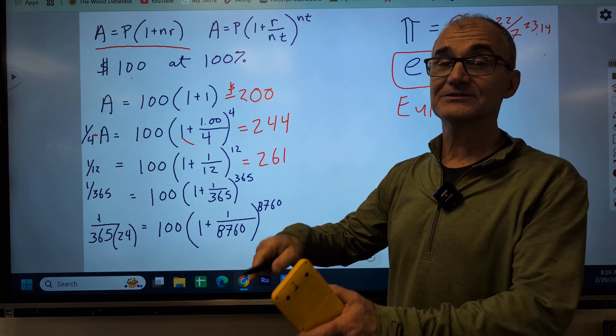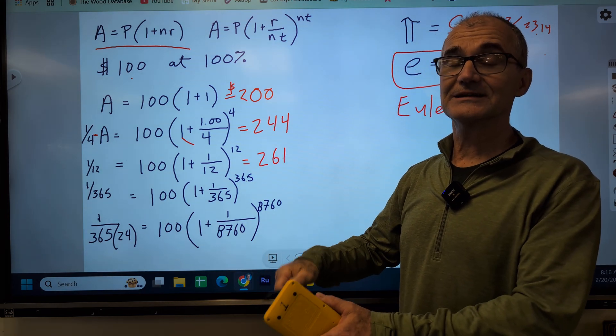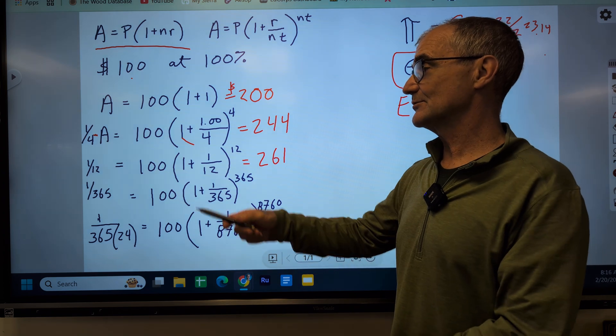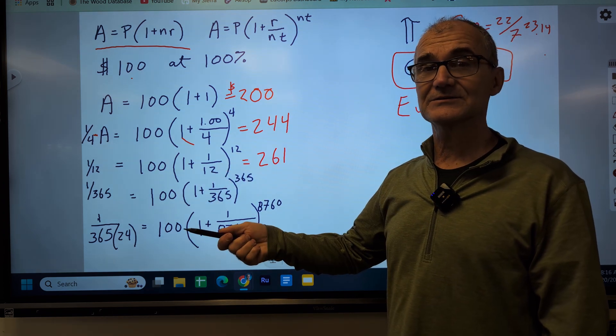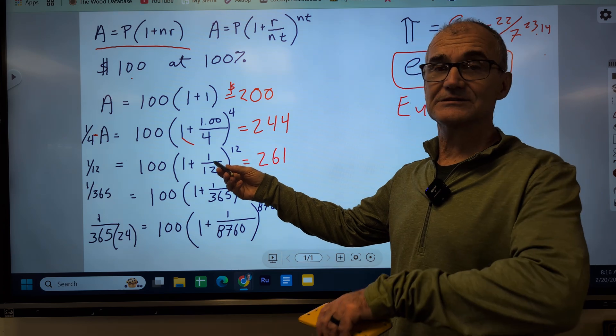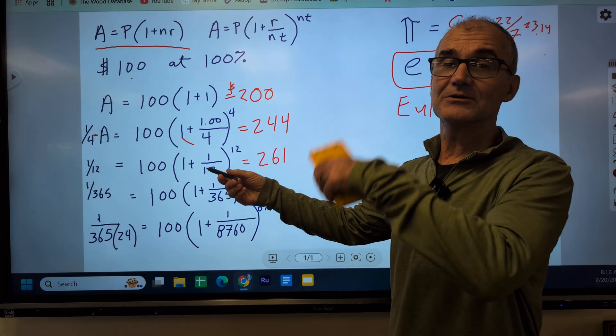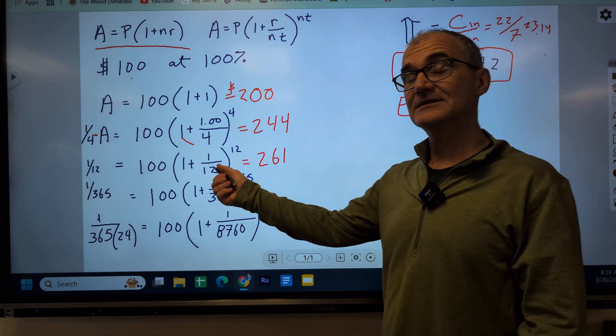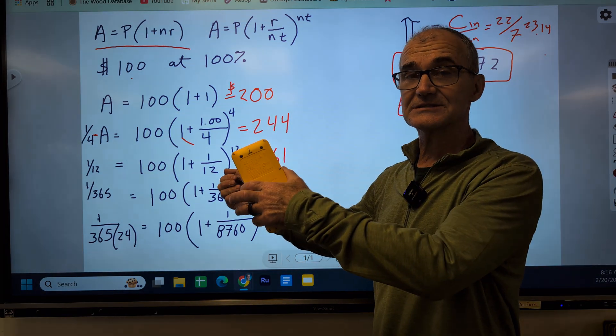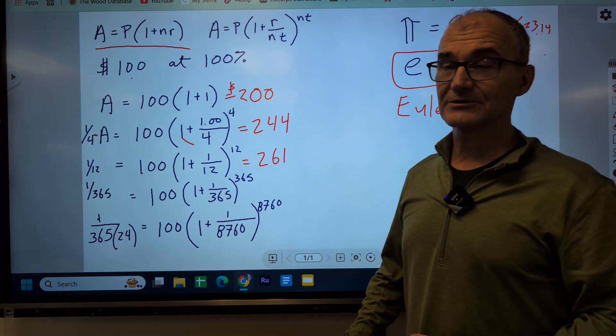So you can see the more you compound it, the more you earn. Don't forget the converse is true too, and this is where people get killed with borrowing. If you are borrowing, the bank's charging you the same way. It is compounded continuously, so they are charging you money on the money you owe, on the interest you owe, and it just escalates out of control. It's great if you're earning that interest, and it hurts if you're borrowing that money.